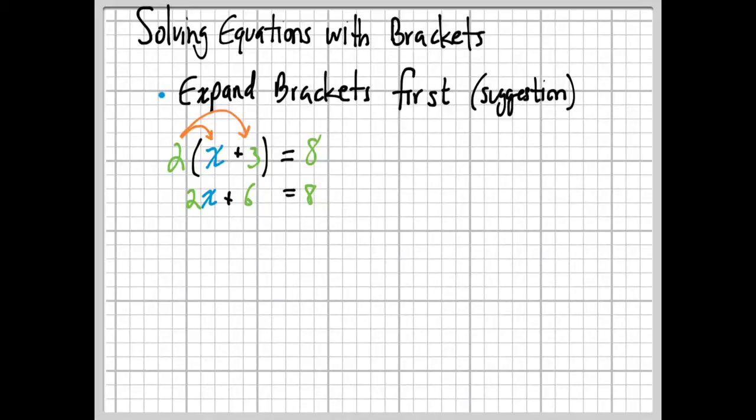So we expanded the brackets. Now it's just like a regular linear equation. We have 2X plus 6, so we're going to subtract 6 from both sides. The 6's cancel out and we just have 2X on the left, and 8 minus 6 is 2. Now we're multiplying the X by 2, so in order to undo that, we're going to divide by 2 on both sides. The 2's cancel out on the left and we get X equals 1 because 2 divided by 2 is 1.